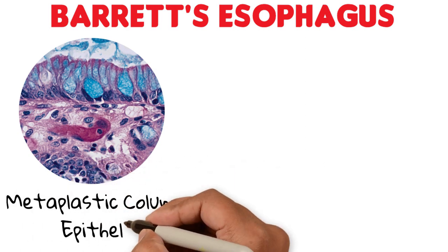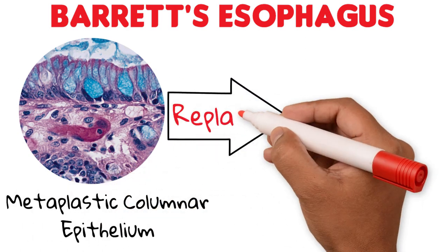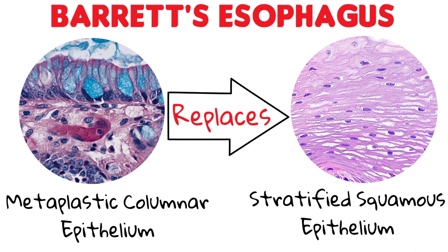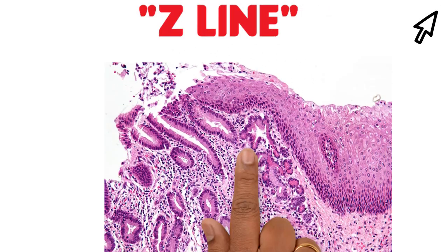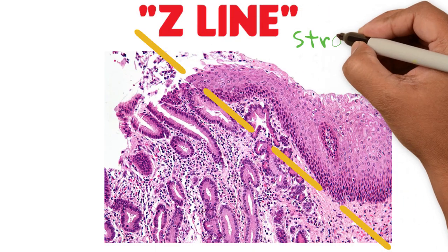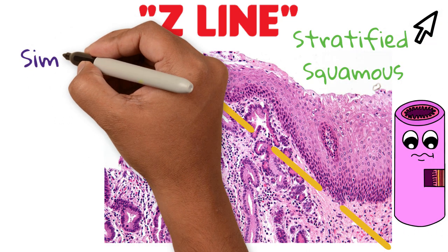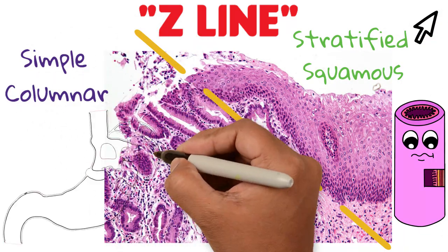Barrett's esophagus is the condition in which any extent of metaplastic columnar epithelium replaces the stratified squamous epithelium that lines the distal esophagus. Remember that in the second video of esophageal histology we talked about the Z-line being the union of the stratified squamous epithelium of the esophagus with the simple columnar epithelium of the stomach.